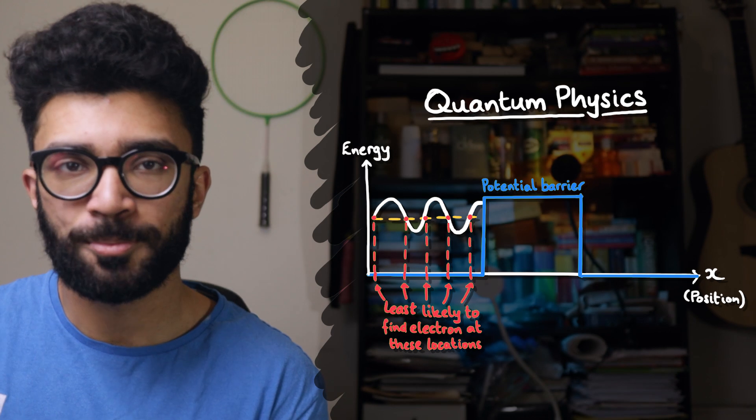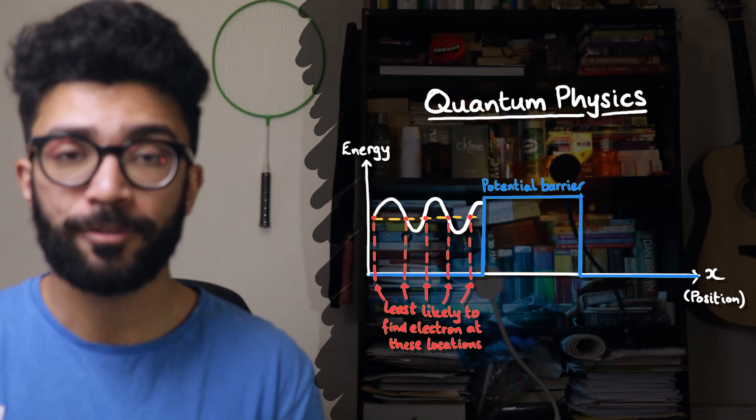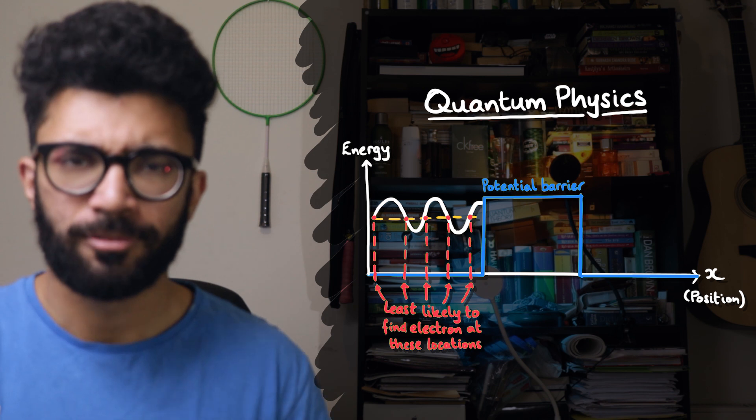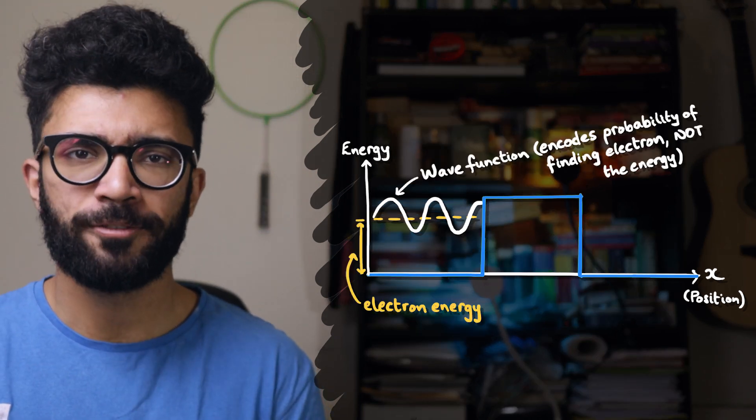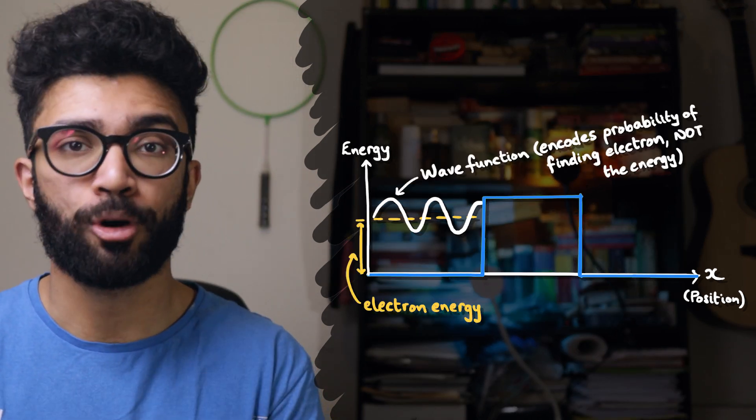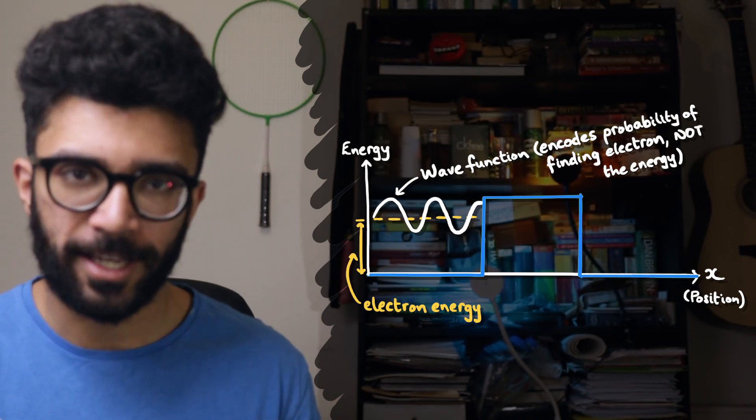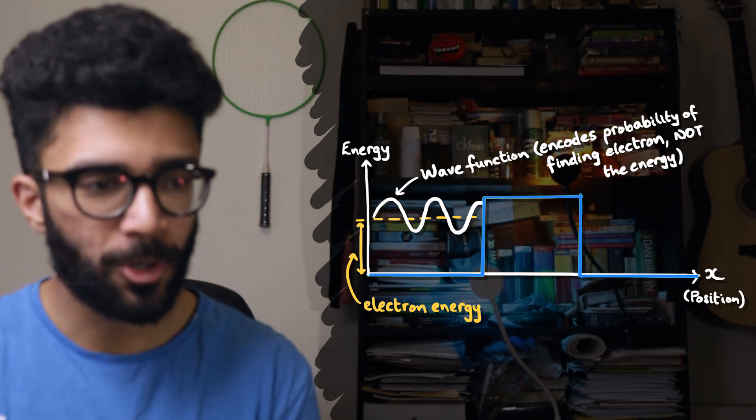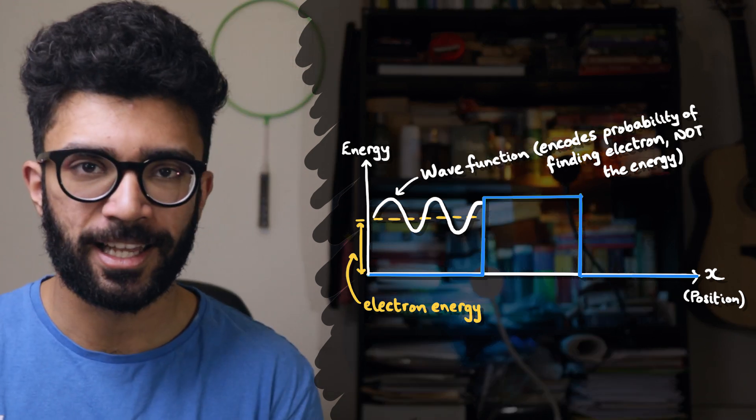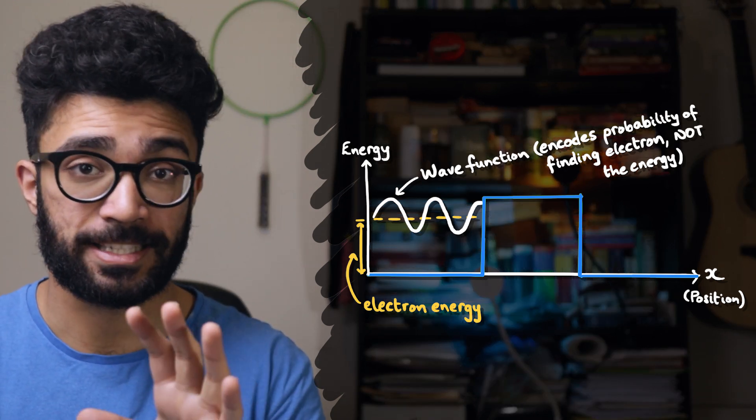But some of you might have by this point spotted a problem with the way that we've drawn this graph. Don't worry if you haven't though, it's quite subtle. Remember that the uppy-downiness of the wave function is actually encoding the probability with which we will find the electron in a certain position. It's not encoding the energy of the electron. The energy of the electron is actually constant.